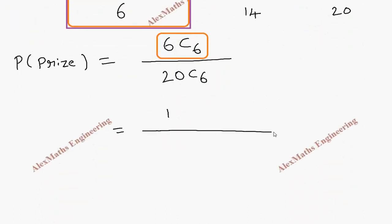6C6 is 1. 20C6 is 20 into 19 into 18 into 17 into 16 into 15, whole divided by 1 into 2 into 3 into 4 into 5 into 6. So here 6×3 is 18, we can cancel this.